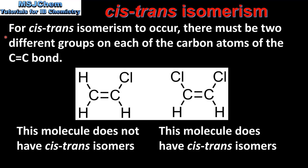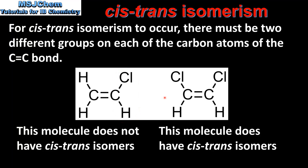For cis-trans isomerism to occur there must be two different groups on each of the carbon atoms of the carbon to carbon double bond. Here we can see two molecules with carbon to carbon double bonds. On the left we have chloroethene, on the right we have 1,2-dichloroethene. The molecule on the left does not have cis-trans isomers, because only one of the carbon atoms is bonded to two different groups. The molecule on the right does have cis-trans isomers, as each carbon atom of the double bond is bonded to two different groups.